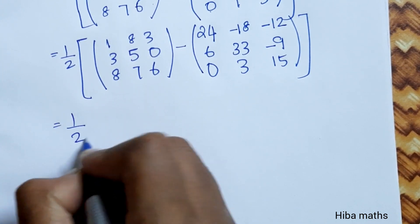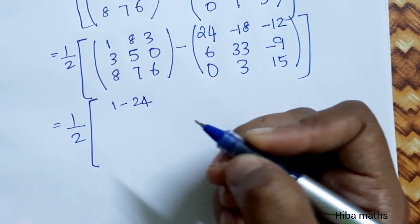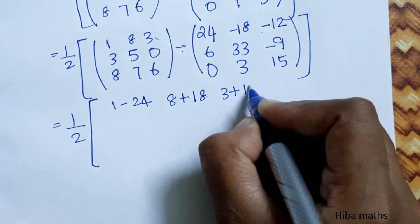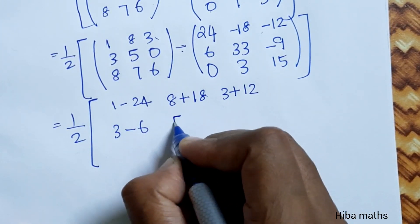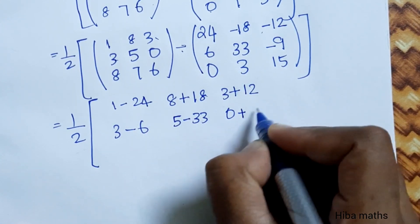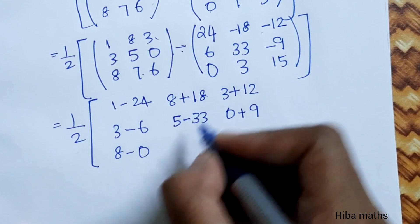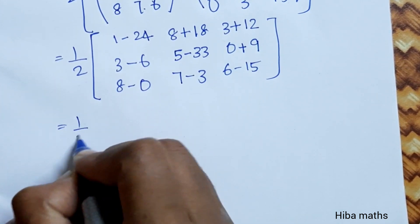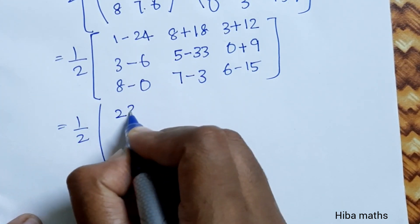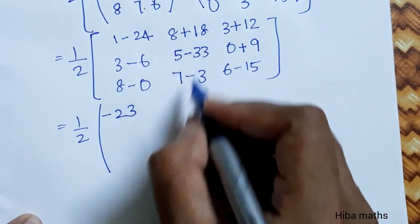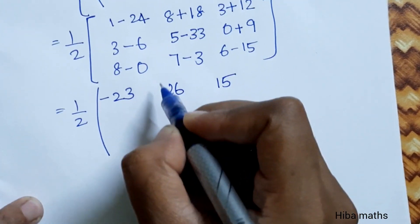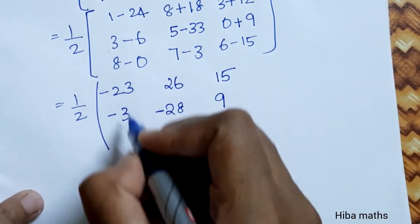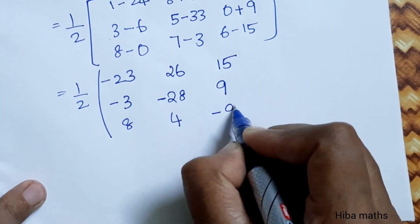Now we will subtract, applying 1/2: 1 minus 24, 8 minus into minus plus 18, 3 minus into minus plus 12, 3 minus 6, 5 minus 33, 0 minus into minus plus 9, 8 minus 0, 7 minus 3, 6 minus 15. Simplifying: minus 23, 8 plus 18 is 26, 3 plus 12 is 15, 3 plus 3 minus 3 gives minus 28, minus 28. Then 9, 8, 7 minus 3 is 4, 6 minus 15 is minus 9.